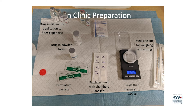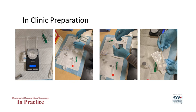Patch test reagents can also be mixed in the clinic with a scale. Petrolatum is typically the favored excipient, although water and another excipient can be used if the drug is soluble. In the clinic, we use a scale that can measure to 0.001 grams. The powder of the drug to be patch tested is weighed out into a medicine cup, and petrolatum is added to make the correct percentage. For example, 0.01 grams of ampicillin is weighed out and 0.09 grams of petrolatum is added for a 10 percent ampicillin patch test. Mix with a cotton tip swab until the powder is fully incorporated.